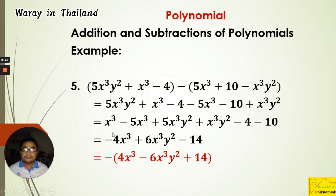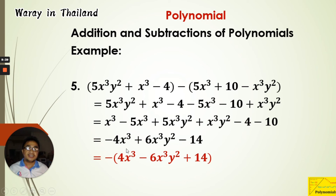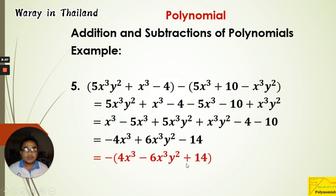Looking at our answer, the leading term is negative, which is not ideal. It's better to write the answer with a positive leading term. You can swap the order so that 6x³y² comes first, or you can factor out the negative. If you factor out the negative: −4x³ becomes positive, 6x³y² becomes negative, and −14 becomes positive. That's all for today — we'll have more examples on addition and subtraction next meeting. See you tomorrow!